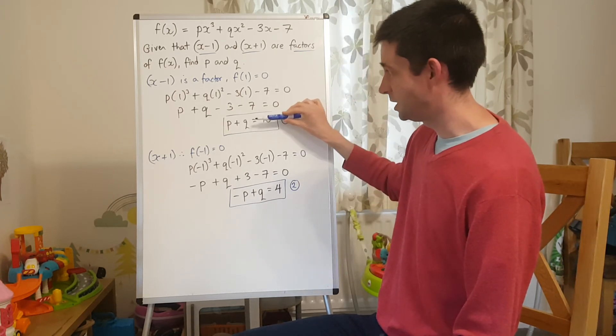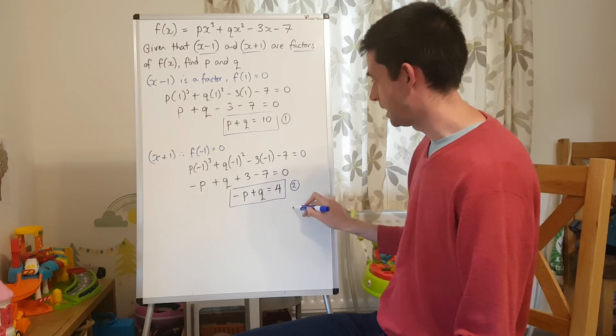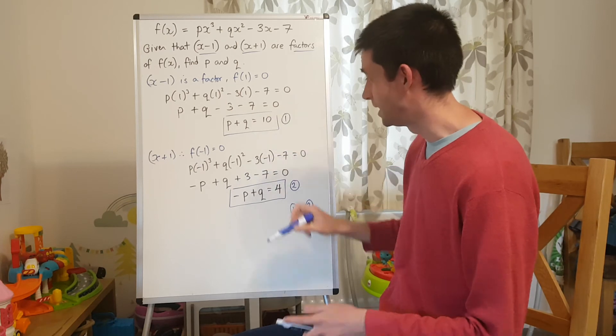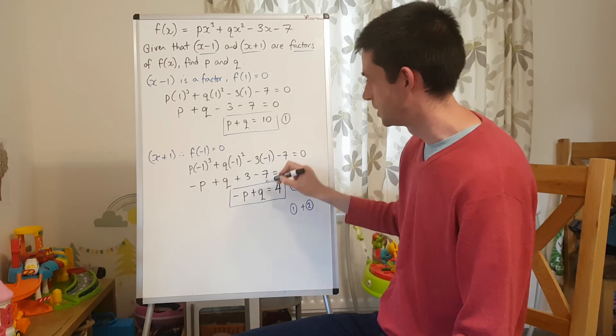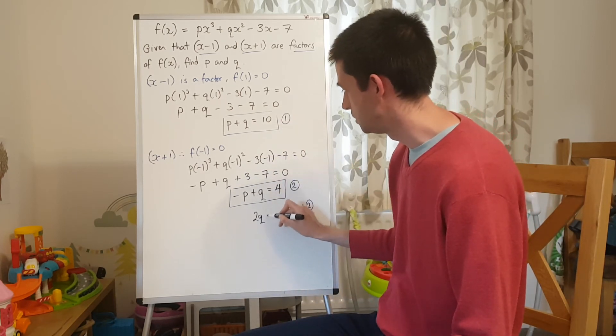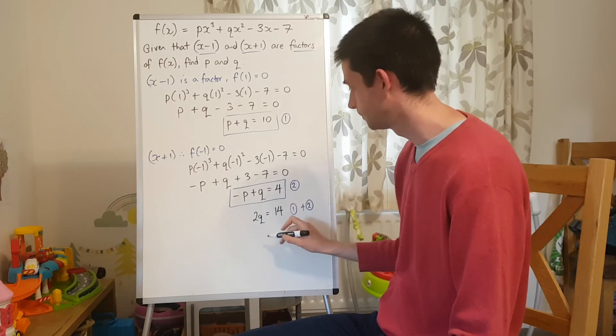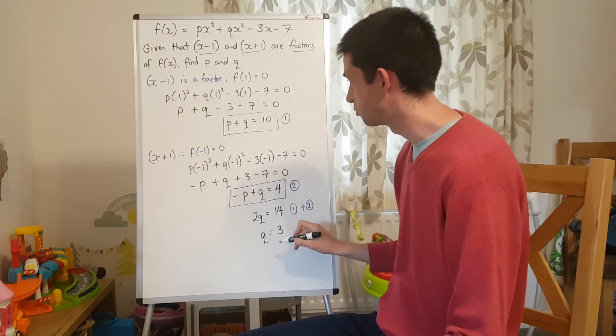So, as you can see by looking at them, if I add the two equations together, I've got p plus -p, so it's going to eliminate p. So, q + q, that's going to give me 2q = 10 + 4, which is 14, which means that q is 3.